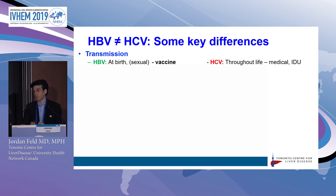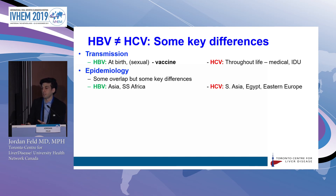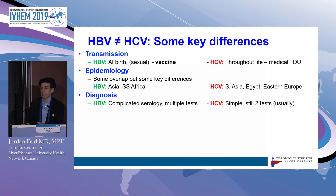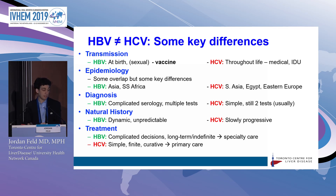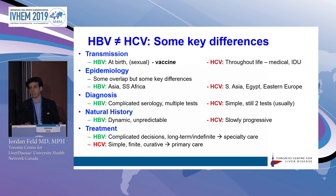It's important to recognize the key differences between these two infections. For hepatitis B, vertical transmission is still the major global driver, but we do have a vaccine. For hepatitis C, it's a problem throughout life, still driven globally by iatrogenic transmission and injection drug use. There is some epidemiological overlap, but key differences exist in where the major burden lies. The diagnosis is complicated for hepatitis B because the serology is not simple and requires multiple tests, whereas for hepatitis C it's relatively straightforward. The natural history for B is much more dynamic and unpredictable, making it harder to simplify, while treatment decisions are far more complicated for B because long-term or indefinite care is required.